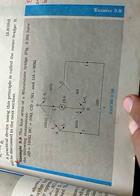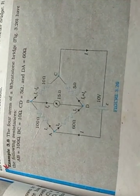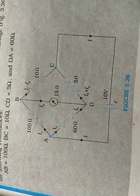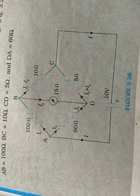This is the case of unbalanced Wheatstone bridge, in which we have four sides, and the points B and D are connected through a galvanometer.